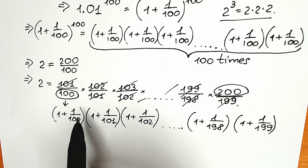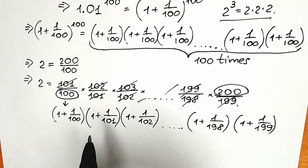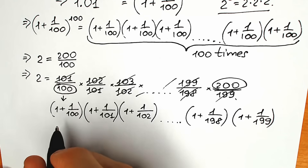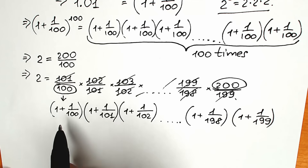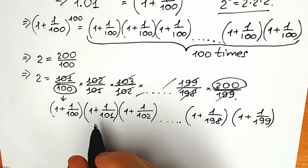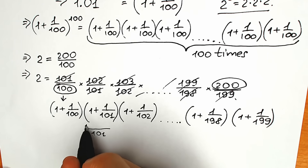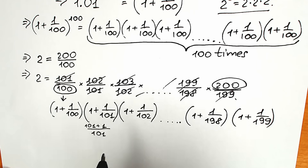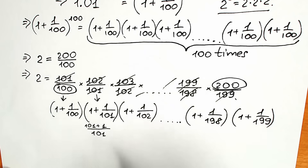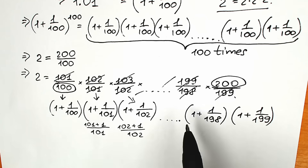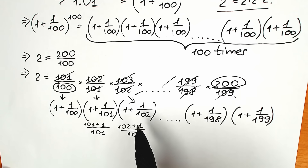Maybe some students don't understand if this rewriting is correct. Let's prove it quickly. Take 1 + 1/100 — that gives 101/100, which is correct. The second one: 1 + 1/101 has common denominator 101, so the numerator is 101 plus 1, giving 102/101. And the third one works absolutely the same way. So these expressions are verified and correct.